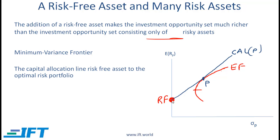We can create a capital allocation line which starts at the risk-free asset and is tangential to the efficient frontier. It will pass through the point P, which is the optimal risky portfolio. An investor at the left end of the line is 100% invested in the risk-free asset. At point P, an investor is 100% invested in this optimal portfolio. You can think of this optimal portfolio as a bundle of risky assets — then think of that bundle as one single bundle.